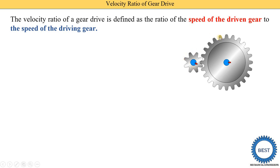Here you see the diagram of a spur gear. This is our driving gear and this is the driven gear. The driving gear is connected with a power source like IC engines or electric motors, and the driven gear is rotated due to the driving gear — that's why it is called the driven gear.